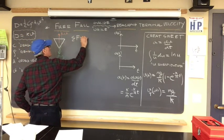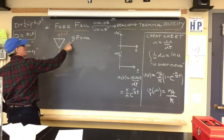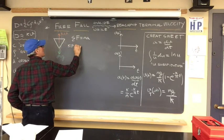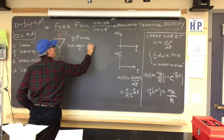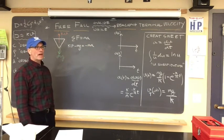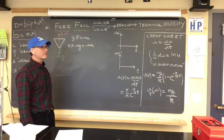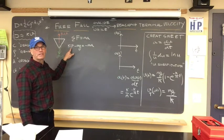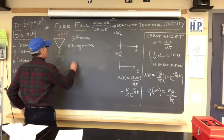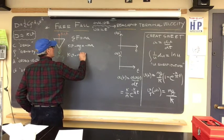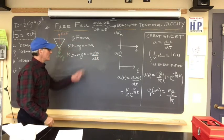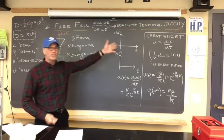This vector, the way I've drawn it in relative length, suggests it's currently equal to mg. But you have to understand that this vector is going to increase in value as a function of velocity — as this thing speeds up, there will be an increase in the drag force. Start with Newton's second law: F equals ma. The sum of the forces along the line of action, which is vertical, is equal to ma.